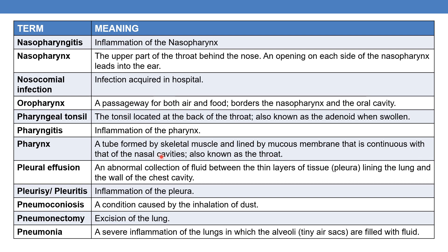Trachea is the windpipe. Pleural effusion is an abnormal collection of fluid between the thin layers of tissue — the pleura — lining the lungs and wall of the chest cavity. Pleuritis or pleurisy is inflammation of the pleura.